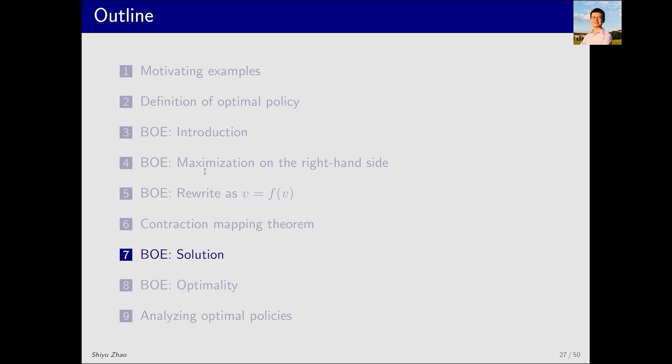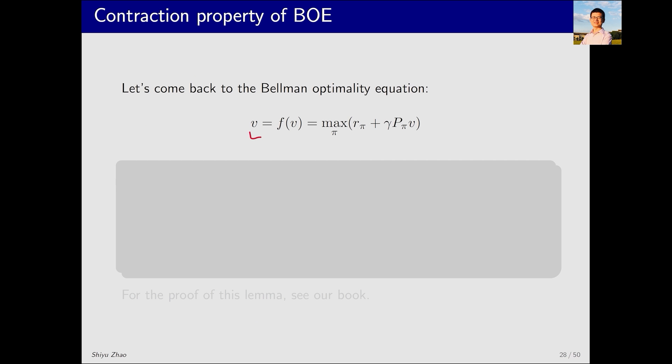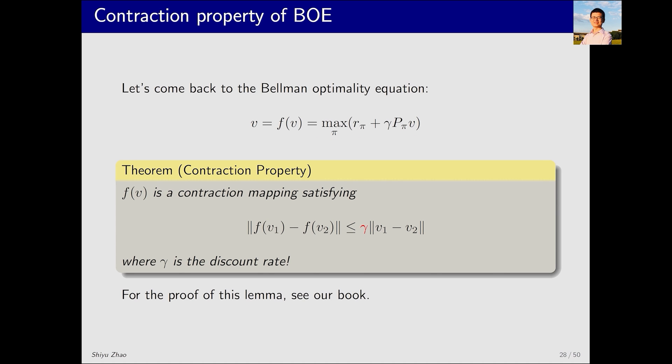With the contraction mapping theorem, we can apply it to solve the Bellman optimality equation. This is the expression of the Bellman optimality equation v equals f(v), which is similar to the problem addressed by the contraction mapping theorem. To apply the contraction mapping theorem, we first need to prove that f(v), which is part of the Bellman optimality equation, is a contraction mapping. We can actually prove this inequality where gamma is the discount rate that is less than 1. Thus, f(v) is a contraction mapping. As to why this function has this property and why this conclusion holds, we won't talk about the details here. If you are interested, the details are available in my book.